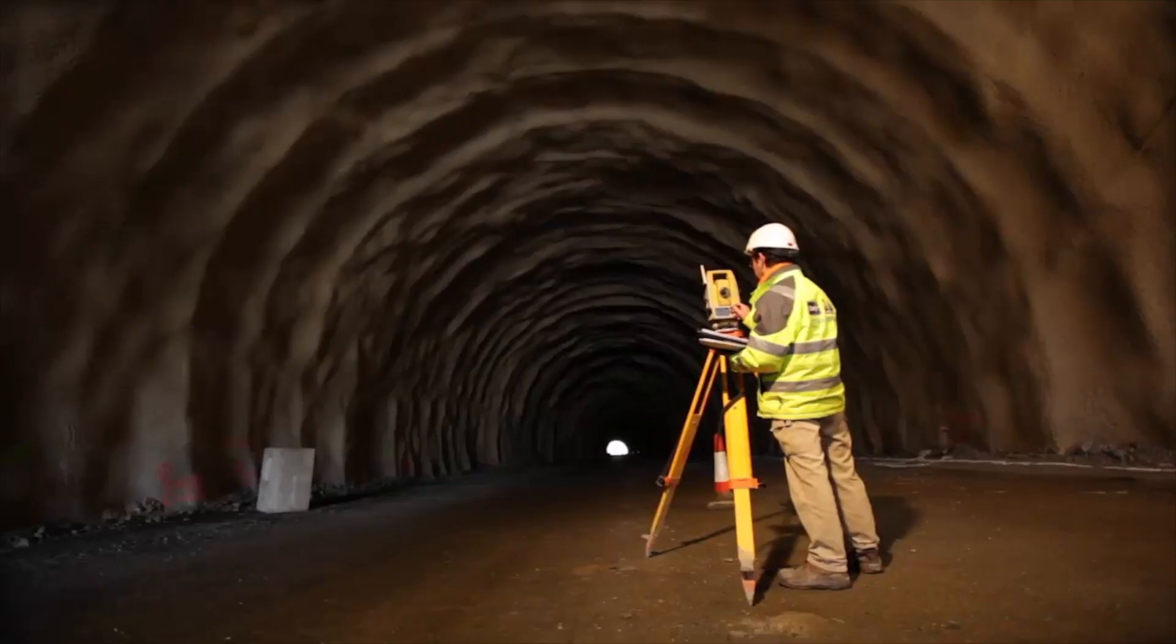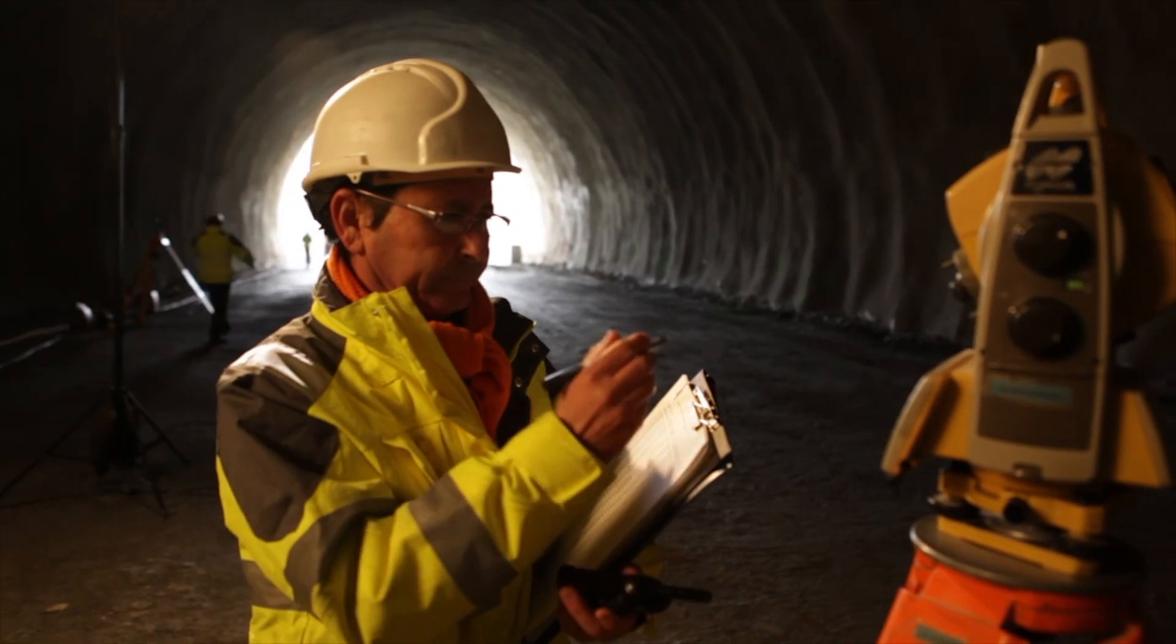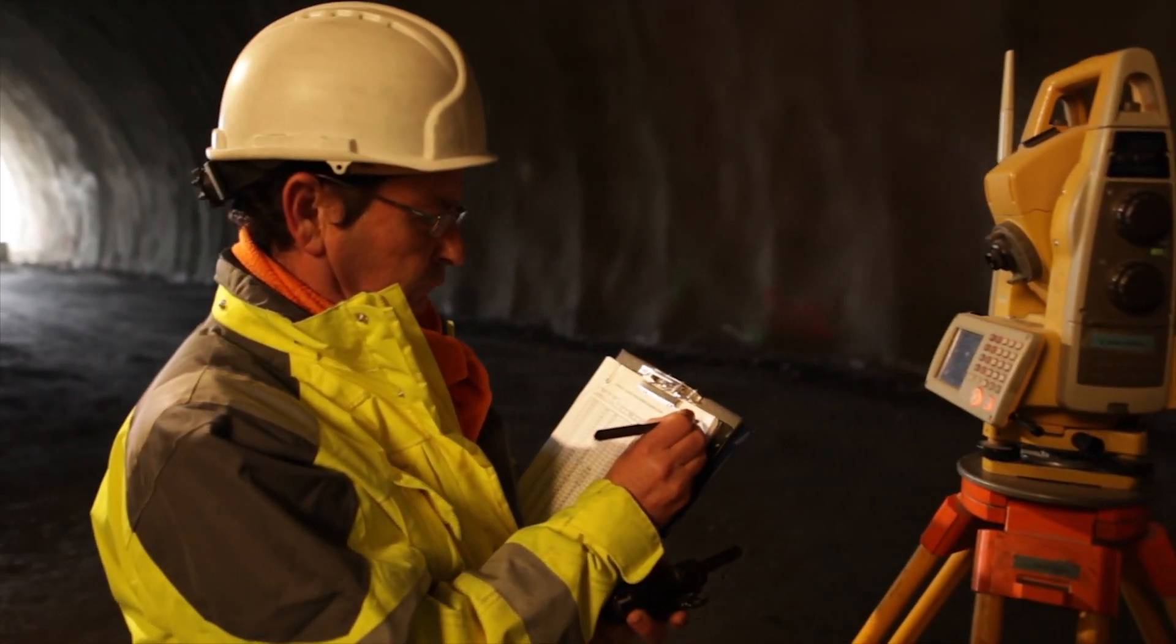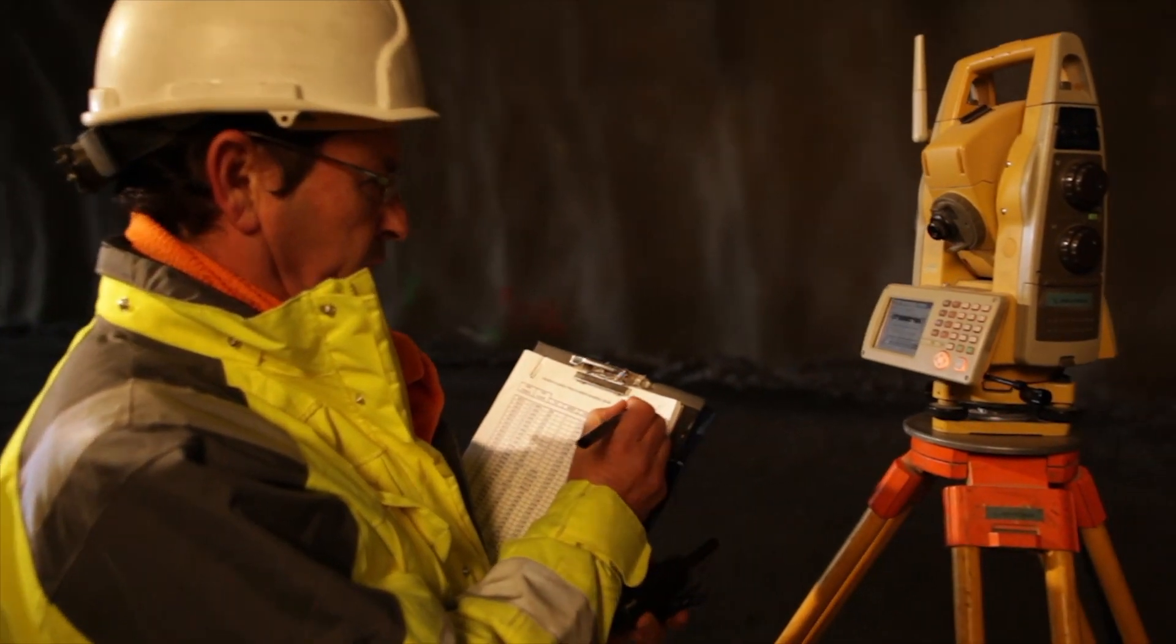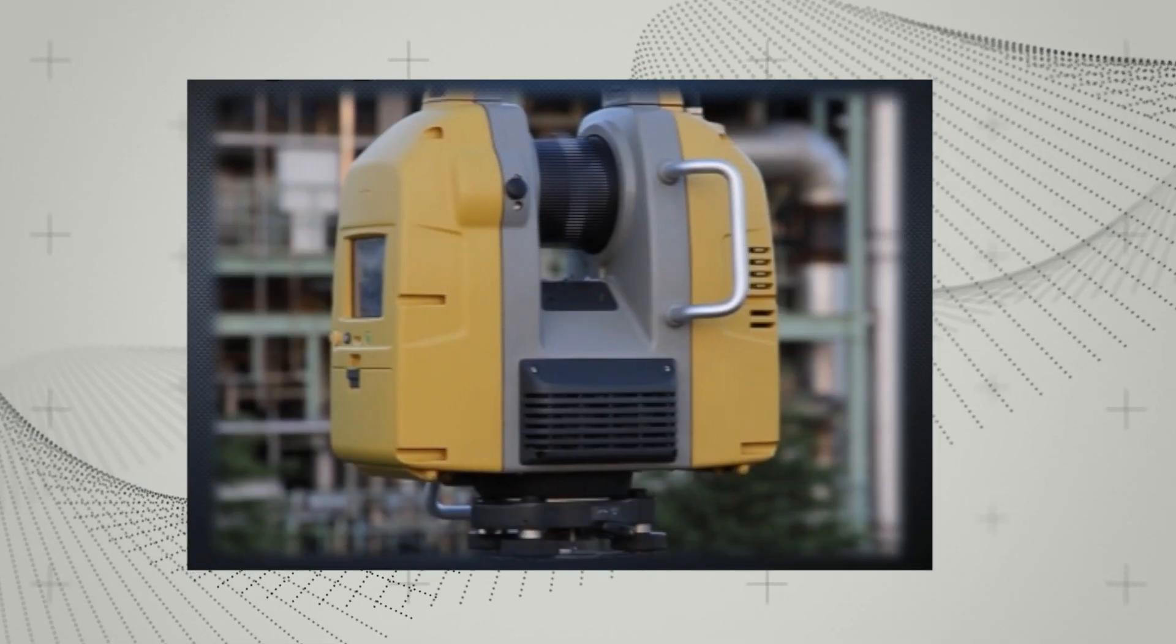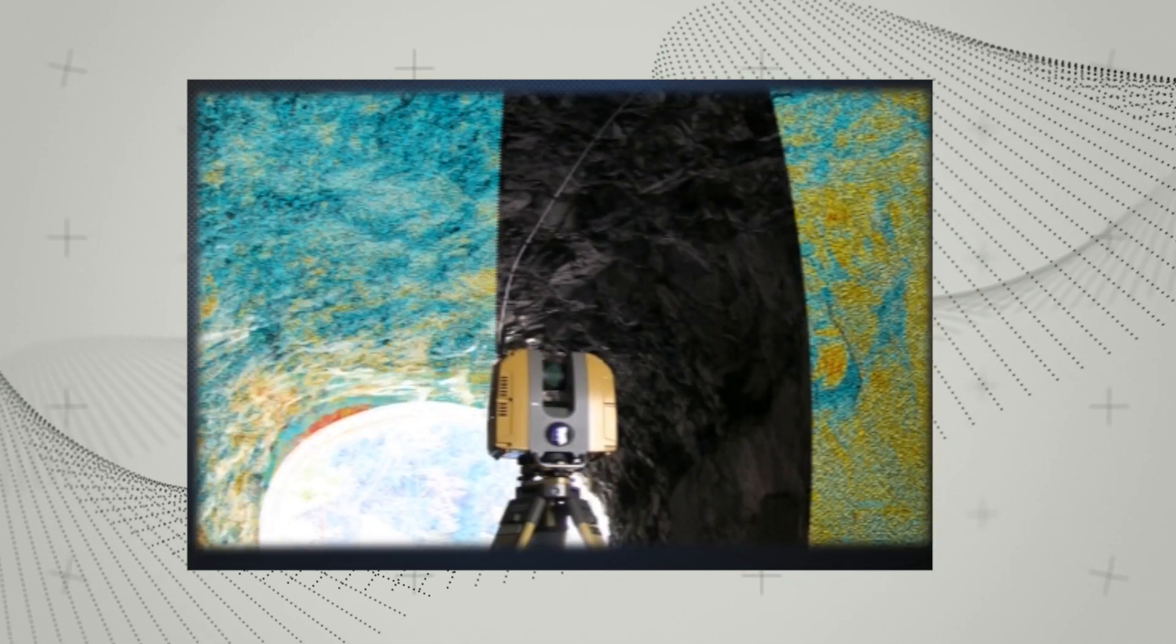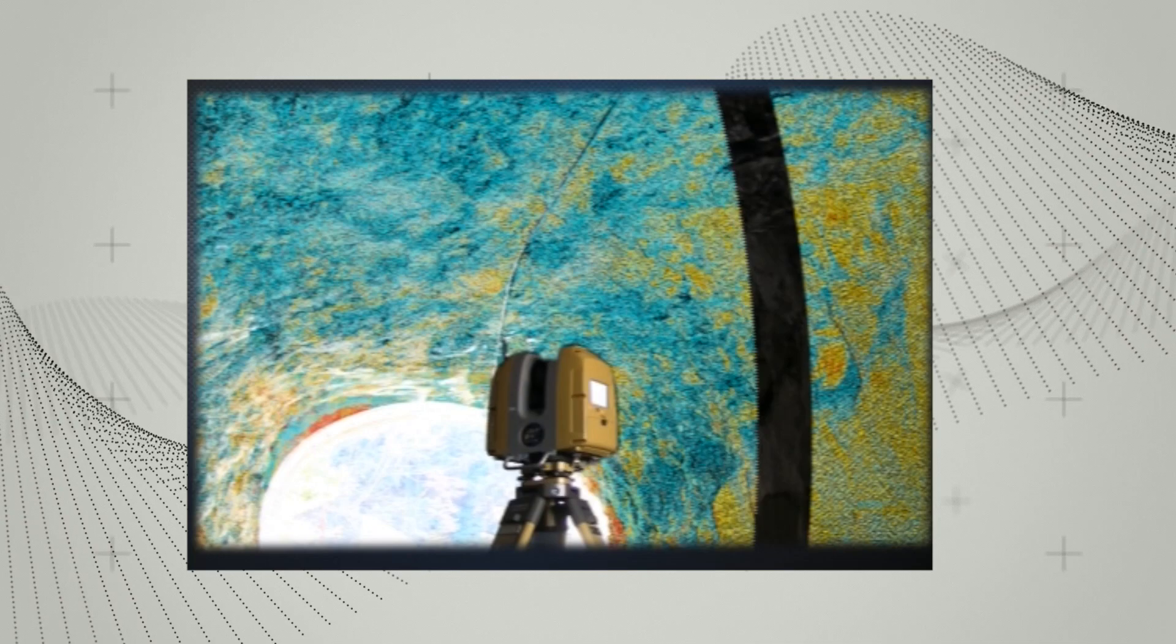While total station-based methods with reflectorless measurements simplify this task, data collection is relatively slow and the level of detail is often not sufficient. Terrestrial scanners, on the other hand, are fast and produce large amounts of data, although they need to be processed in the office.